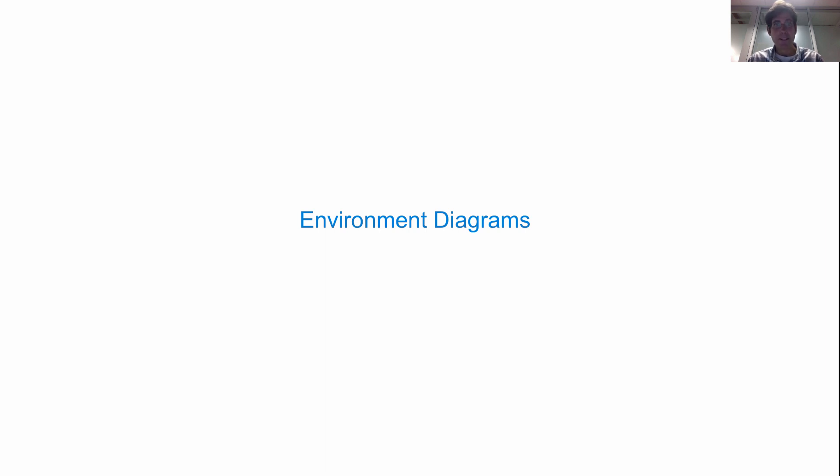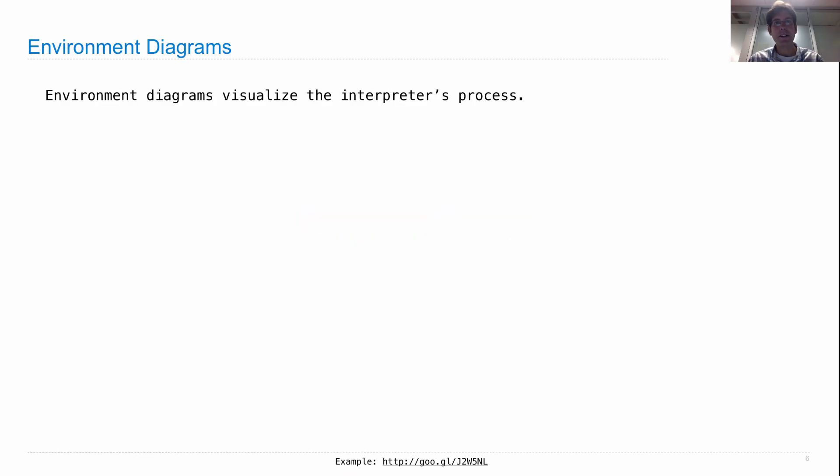So we're going to draw pictures of what they look like. And this will help you become a better computer scientist. Lots of what computer scientists do is draw pictures that involve boxes and arrows pointing to other boxes. It's just a huge part of the discipline, so you might as well start now. An environment diagram is there to visualize the interpreter's process so that we can really understand how programs get executed.